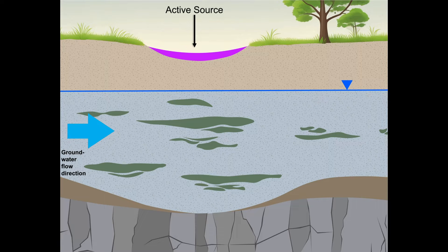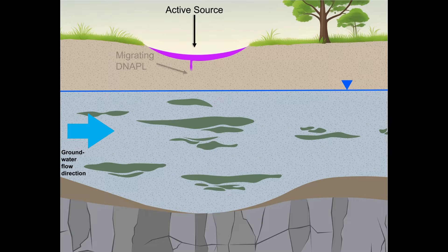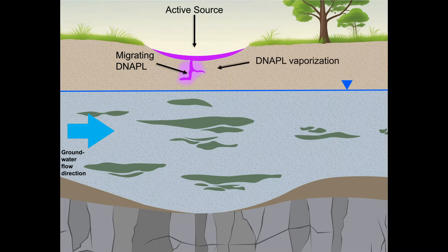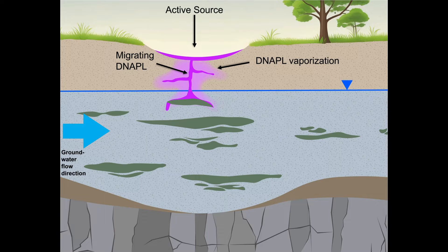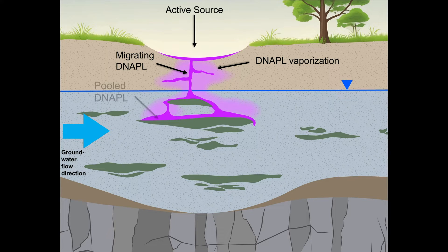When a D-NAPL is introduced at the Earth's surface, it begins to migrate into the soil. As it migrates, D-NAPL vaporizes into the vadose zone while continuing its downward migration to and below the water table. D-NAPL dissolves into the groundwater that flows around it and sorbs to soil and rock.